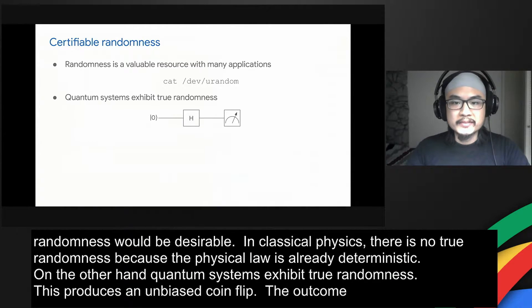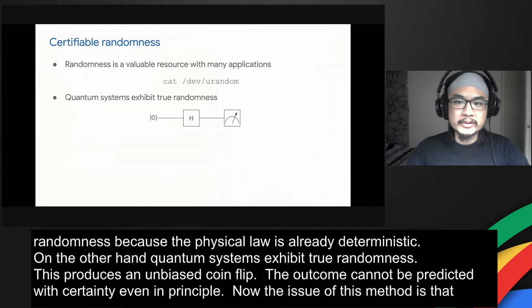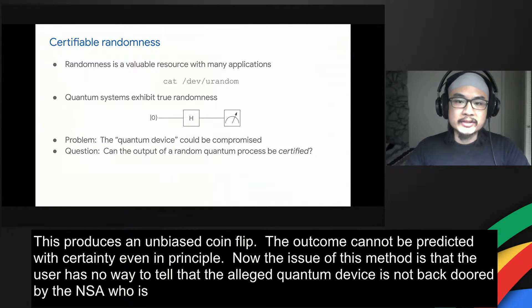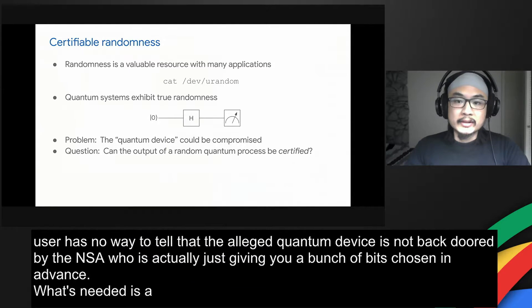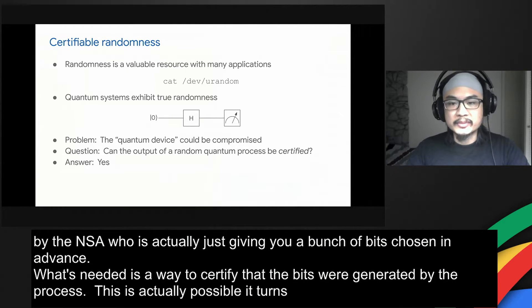Now the issue with this method of generating random numbers is that the user has no way to tell that the alleged quantum device is not backdoored by the NSA who is actually just giving you a bunch of bits that it chose in advance. What's needed is a way to certify that the random bits were actually generated by the claimed process. It turns out that this is actually possible.